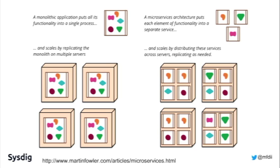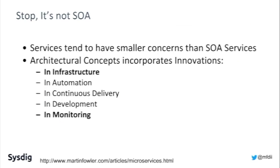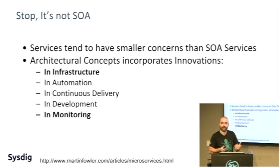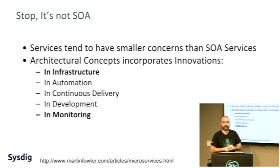Let's boil this down into pictures. You have a monolith, and you take those components or services and break them down into smaller components as much as possible. You try to contain the scope of each service, and then it's much easier to deploy individual services instead of the entire monolith. One of the first things you often hear is that microservices is the same as service-oriented architecture — but it's not. What microservices tries to do is bring in innovations in infrastructure, automation, continuous delivery, development best practices, and monitoring.